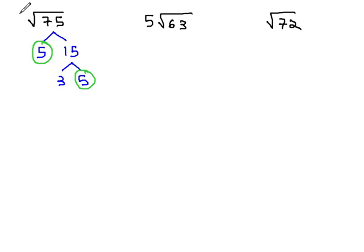The two 5's can come out in front of the square root symbol as one 5, and left inside the radical is a 3. 5 times the square root of 3 is the simplified version of the square root of 75.